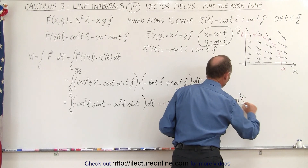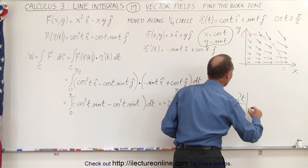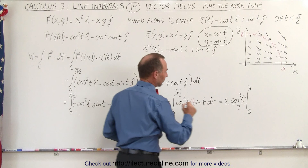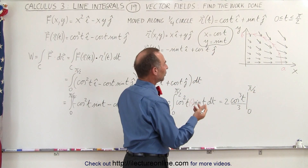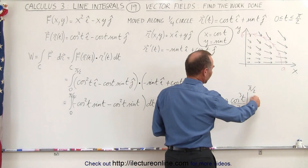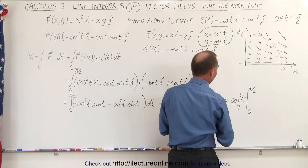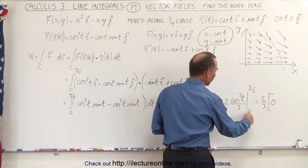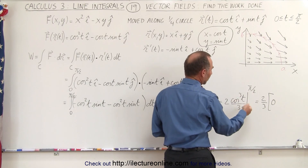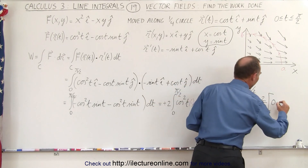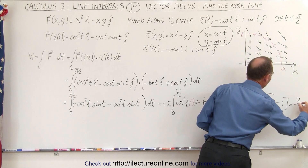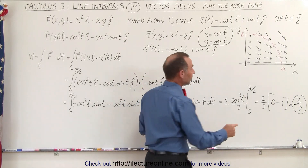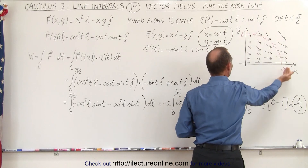We evaluate cosine³(t)/3 from 0 to π/2. Plugging in the upper limit, cosine(π/2) equals 0, so the upper term gives 2/3 times 0. Plugging in the lower limit, cosine(0) equals 1, and even cubed it remains 1, but we subtract it because it is the lower limit, giving minus 1. So the result is negative 2/3, which represents the work done by moving through the vector field from A to B along the quarter circle path.